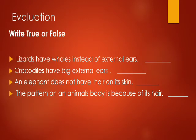Evaluation — write true or false. Lizards have holes instead of external ears. Crocodiles have big external ears. An elephant does not have hair on its skin. The pattern on an animal's body is because of its hair.